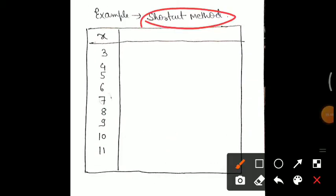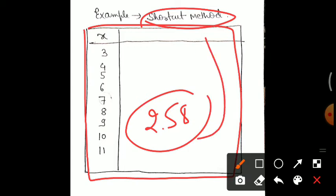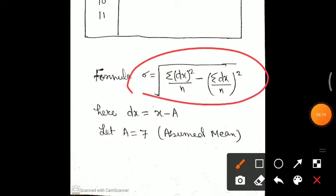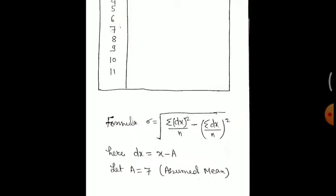For the shortcut method, we use the same table and the same example. We will solve it using the shortcut method and then match the answer. Our previous answer is 2.58, so let's see whether the shortcut method gives the same result. In the shortcut method formula, dx equals x minus a, where a is the assumed mean.